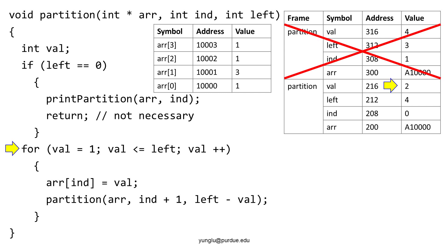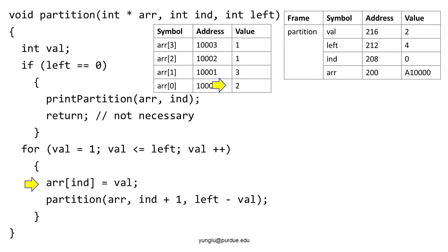The top frame is popped. Val increases to 2. Left is 4 and is greater than val, thus the program enters the for loop. The first line inside the for loop assigns 2 to the first element of the array. This lecture explains step by step how a recursive function works. We closely examine the changes in the stack and the heap memory. It is important for you to become very familiar with the changes in stack and heap memory if you want to fully understand recursive functions.